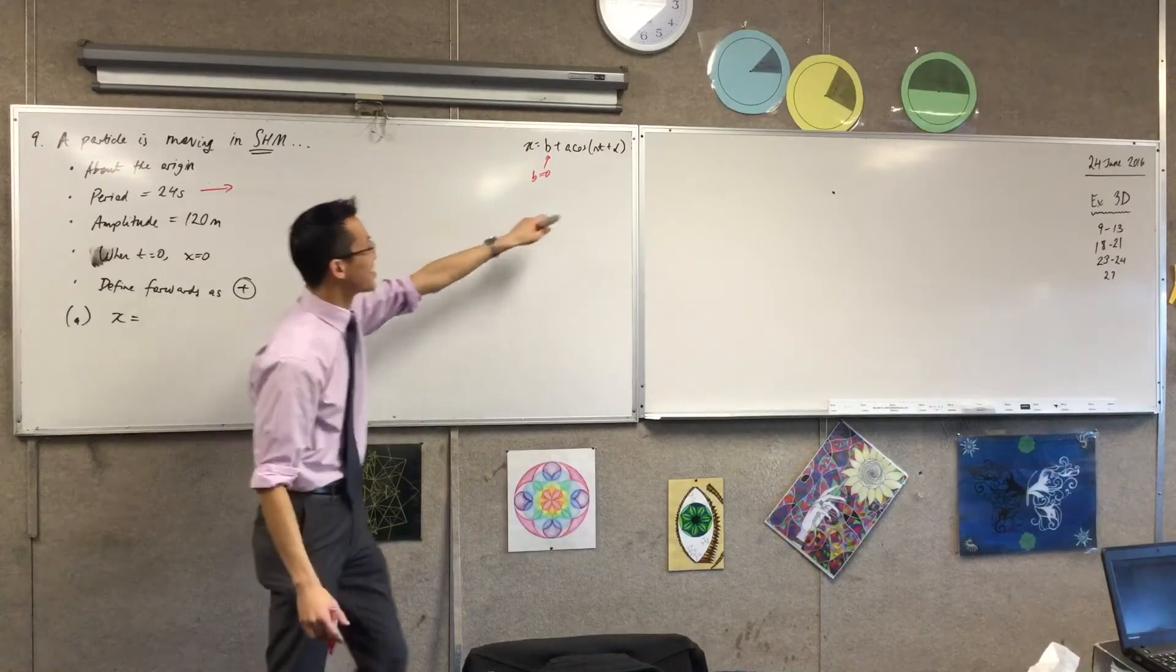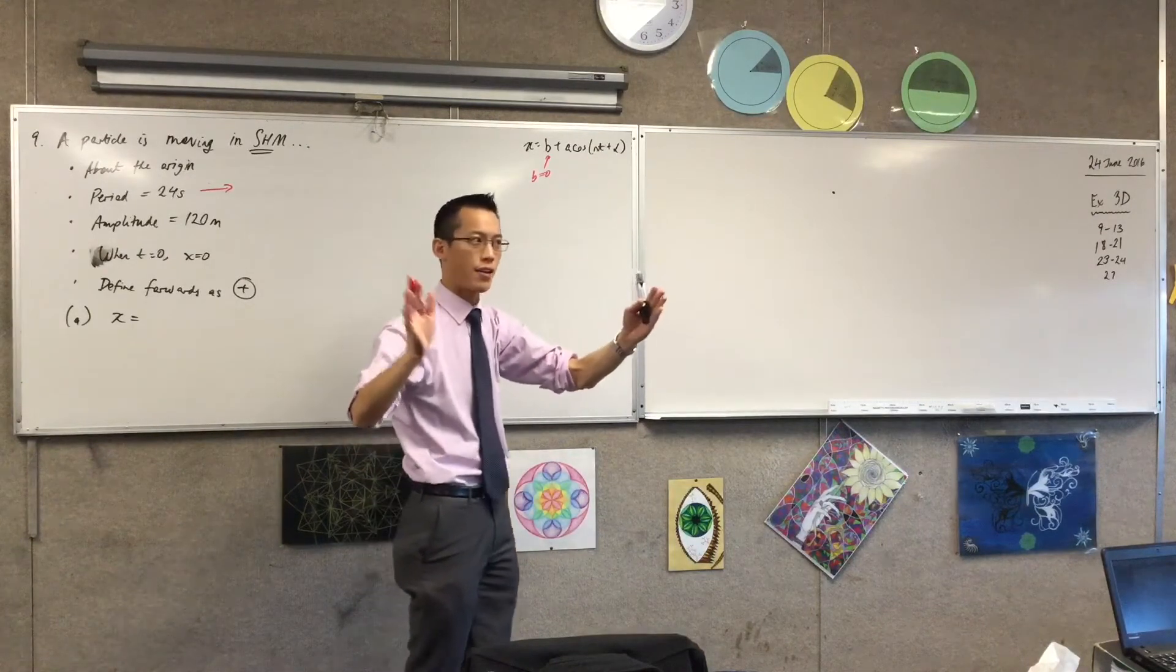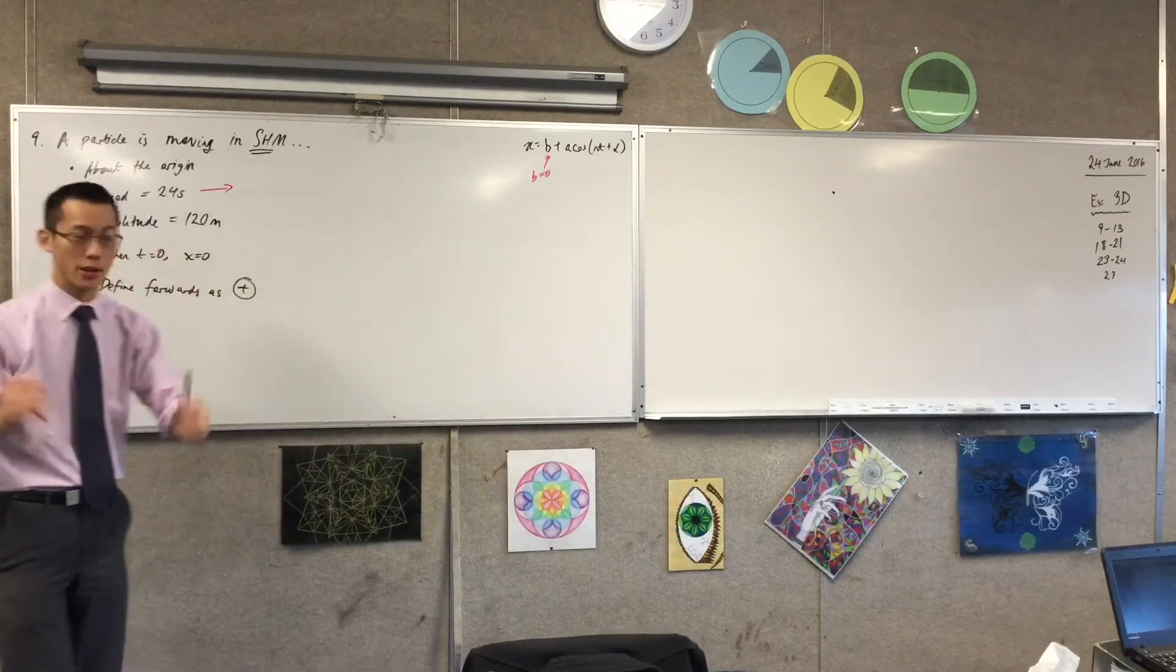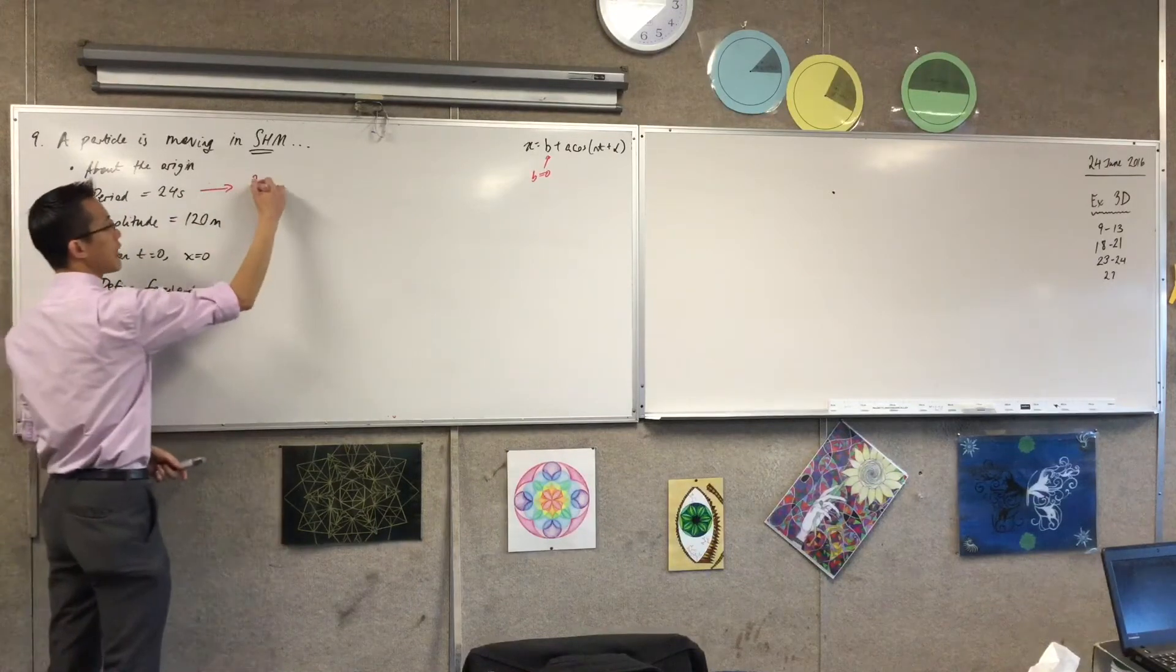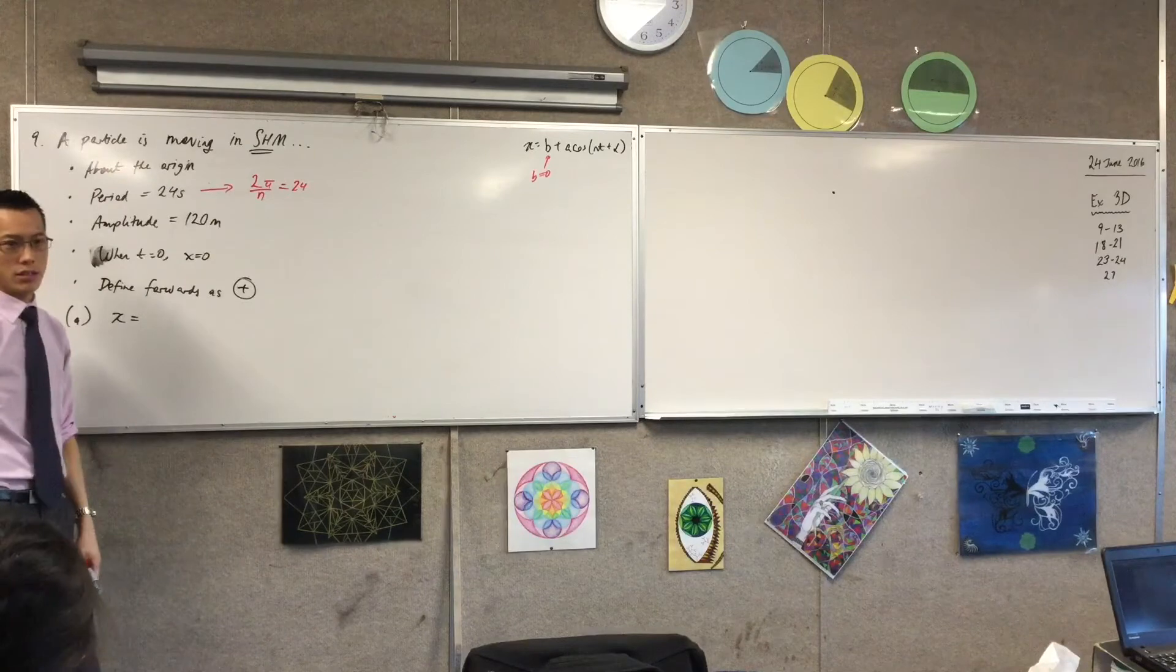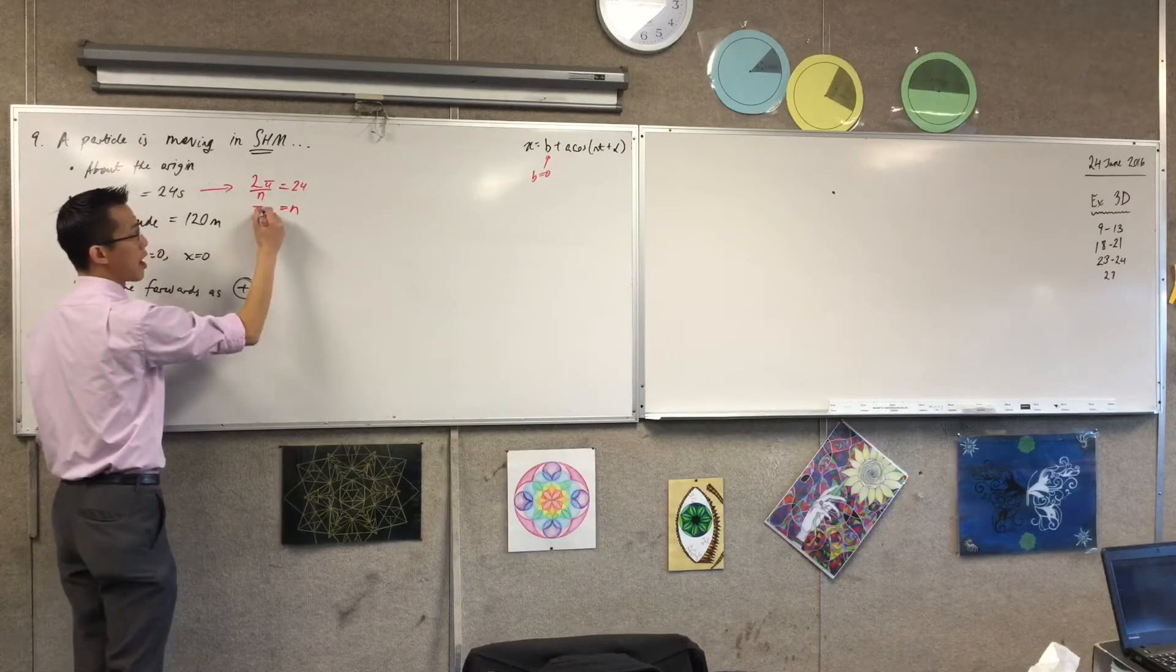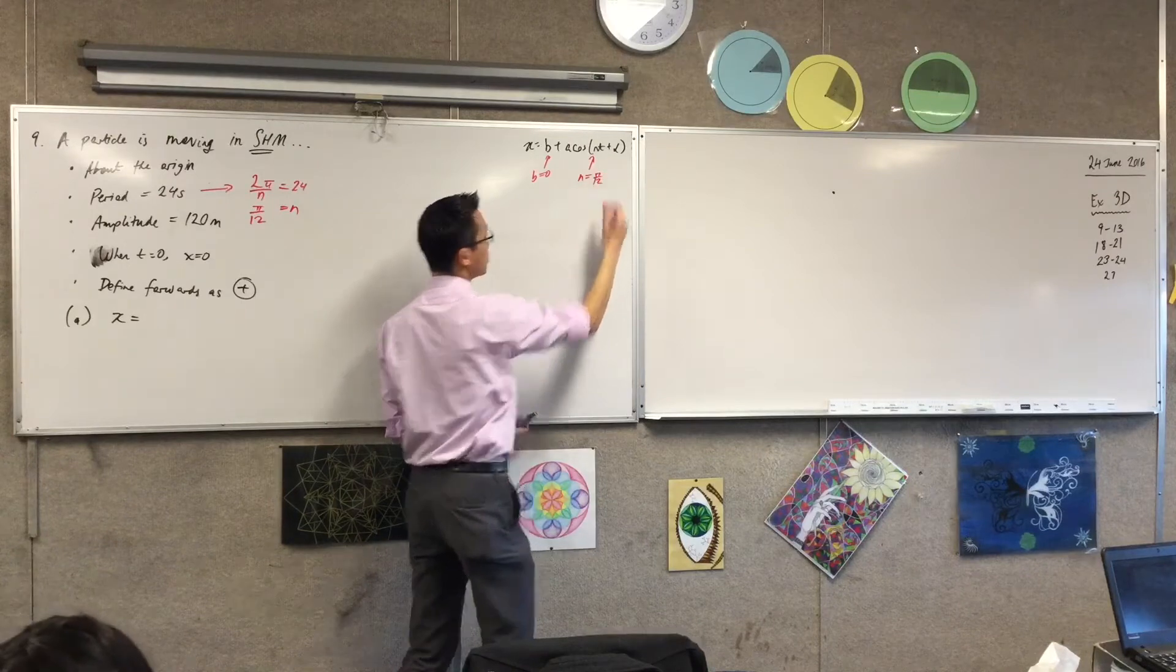So I'll factorize the inside. If there was a 3t plus whatever there, how am I getting the period out of that number? 3, what do I do with it? What do I do with the coefficient of t? I do 2 pi on 3, right? So 2 pi on 3 would, in fact, be the period. But they've given me the period here. I'm trying to find out what the n is. I'm going in reverse order. So I'm going to say 2 pi on n, that's the period, is 24. Does that make sense? And then, of course, all I need to do here is make n the subject. So I'm going to multiply n across, divide by 24. So that puts that guy over there. This is going to be pi on 12.